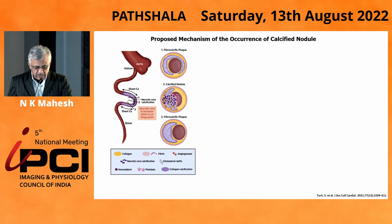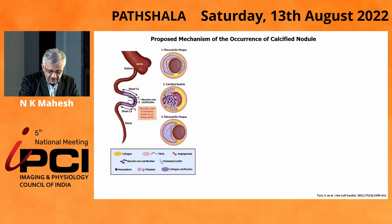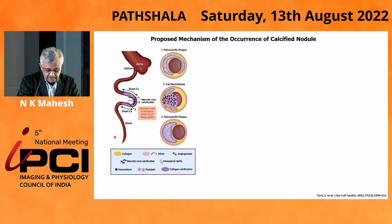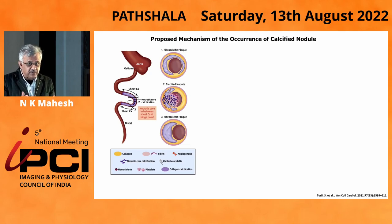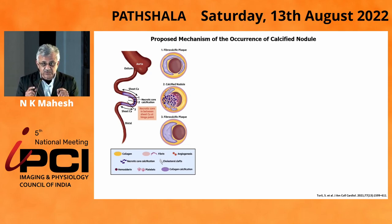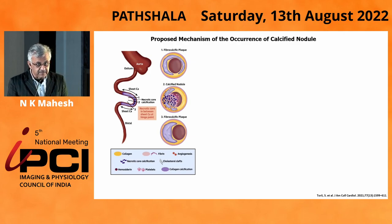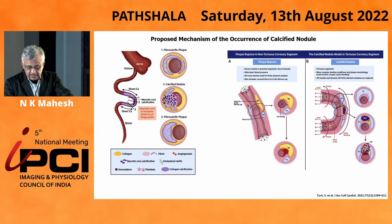This mechanism has already been shown. We have an area which is very tight in the center. Proximal to that, you have a fibrous plaque; distal to that also, you have a fibrous plaque. The fellow in between gets squeezed because of the movement of the tortuous coronary artery, and that is where the nodule starts breaking. Once it starts breaking and it breaks the fibrous cap, it becomes a calcific nodule, and that is where the issue becomes serious.